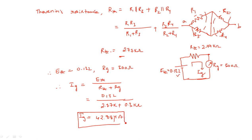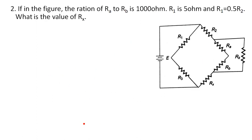Unless the problem specifies an unbalanced condition, you don't need to worry about the current calculation — only unknown resistance calculations will be required. But if it is an unbalanced condition, you can find only the current flowing through the galvanometer.